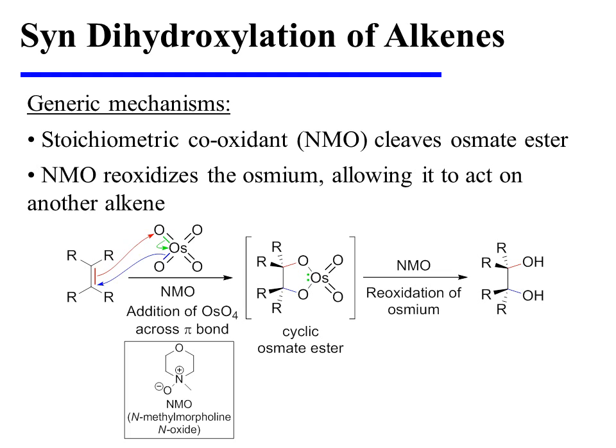The cyclic osmate ester is cleaved in one of a number of ways. A very common approach is to use a stoichiometric co-oxidant such as NMO. NMO stands for N-methylmorpholine N-oxide, and its structure is shown here. NMO reoxidizes the osmium, allowing it to act on another molecule of alkene substrate. This is particularly convenient because it allows small, catalytic amounts of osmium tetraoxide to be used.